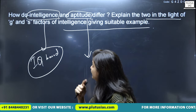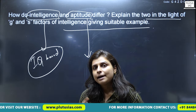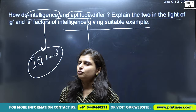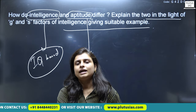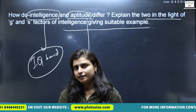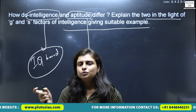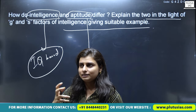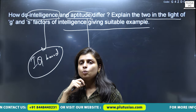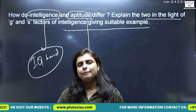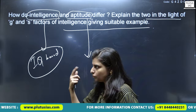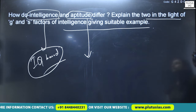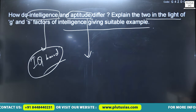For example, the famous cricketer Sachin Tendulkar has a very good aptitude for cricket. You can't say he would make a famous lawyer — looking at his career graph, he clearly has a great aptitude for cricket. Now they ask you to explain both in the light of G and S factors of intelligence.